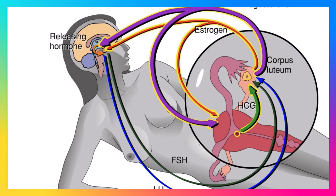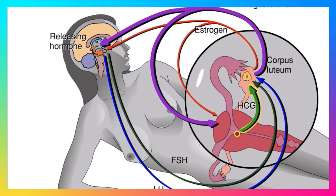Progesterone and estrogen maintain the lining of the uterus and suppress the development of any more follicles. In effect, the embryo signals the corpus luteum to stick around, maintaining the uterus for embryonic development and stopping the monthly cycle.